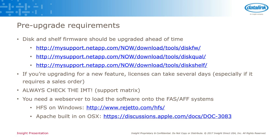If you're looking for a specific new feature, such as the volume encryption that came in the latest 9.x releases, you're going to want to reach out ahead of time for that as well. Those can take several days to get those license keys. With volume encryption you actually have to place an order — even if it's free, some licenses they still track. To get that order processed can take a while, so give yourself a couple of weeks ahead of time before you plan on doing the upgrade. Always check the IMT — that support matrix — and validate you're not getting yourself into a corner by upgrading ONTAP and having external software that isn't compatible.